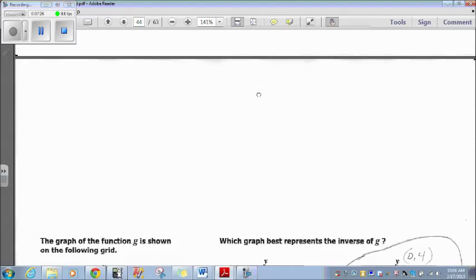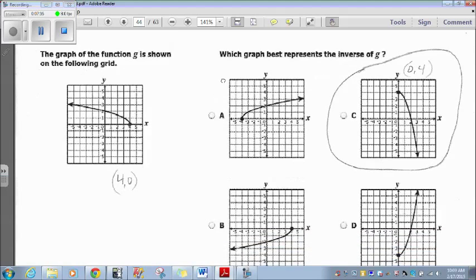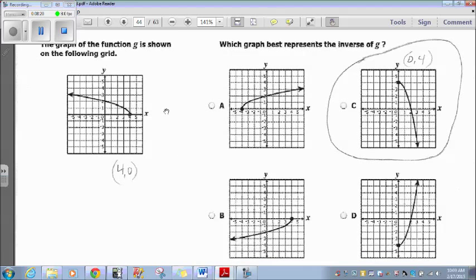Alrighty. And then question 40. Okay. The graph of the function g is shown on the following grid. Which graph best represents the inverse? Now, remember, inverse means opposite. Easiest way to solve this. Look at this graph. What is a point? Well, here's one point here, which would be 4, comma, 0. So, then, I would look for which graph has a point of 0, comma, 4. Here's another point. 0, 2. I would look for a graph which has 2, 0. So, out of the four graphs, choice C has 0, comma, 4 and 2, 0. That right there. Easy. Opposite. Inverse. That's all you need. Okay. Now, in the last video, I'm going to cover the last 10 questions and we'll be done. Okay? See you in the next video.